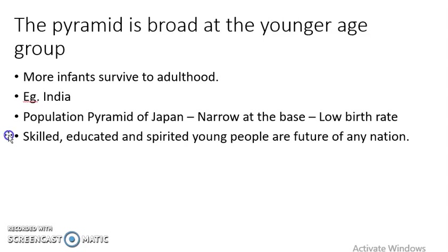Now let us see the population pyramid of Japan, which is narrow at the base. A narrow base means a low birth rate. Japan also has a decreased death rate along with a low birth rate, as shown in figure 6.9. This allows most members of the population to reach old age. So Japan is a country with both low birth rate and low death rate, with a population pyramid that is very narrow at the base.